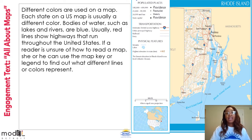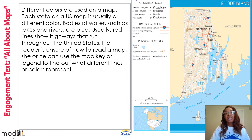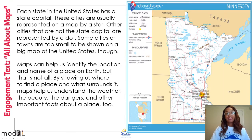Usually, red lines show highways that run through the United States. If a reader is unsure of how to read a map, she or he can use the map key or legend to find out what different lines or colors represent. Each state in the United States has a state capital. These cities are usually represented on a map by a star. Other cities that are not the state capital are represented by a dot. Some cities or towns are too small to be shown on a big map of the United States.